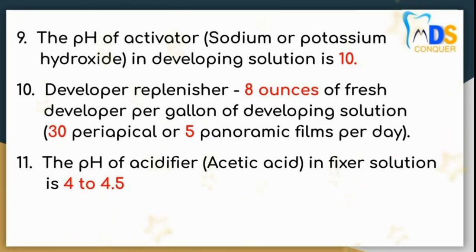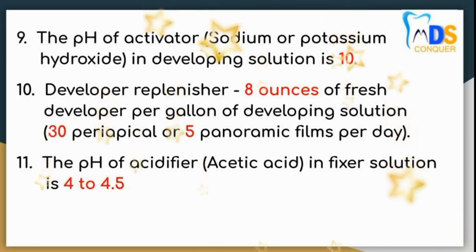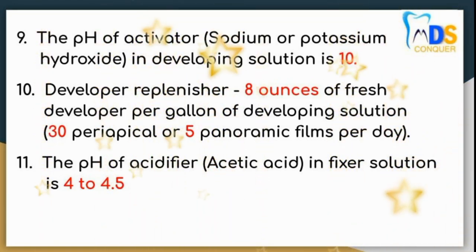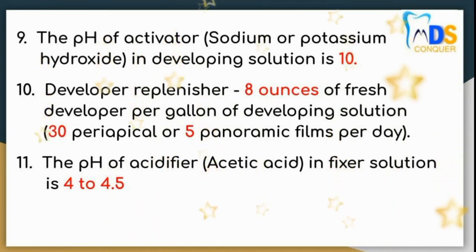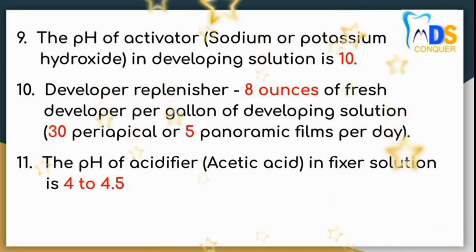Point number 9: The pH of activator, i.e. sodium or potassium hydroxide, in developing solution is 10. Point number 10: Developer replenisher consists of 8 ounces of fresh developer per gallon of developing solution. It is useful to make 30 periapical or 5 panoramic films per day. Number 11: The pH of acidifier, i.e. acetic acid in fixer solution, is 4.5.